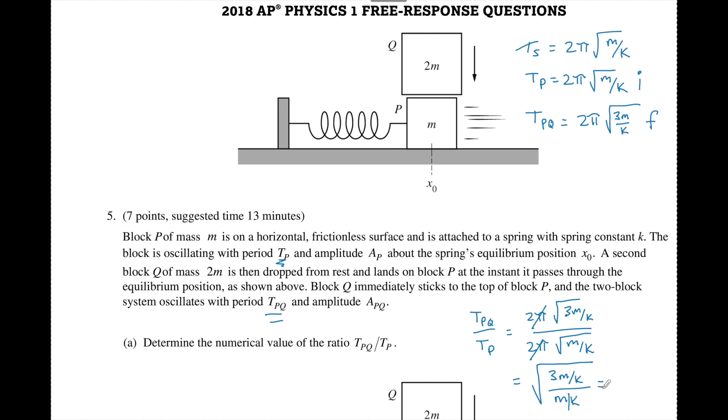And to simplify that further we can bring this up to the top and say this is 3m over k times k over m all under the square root. This will cancel, this will cancel and we see that the ratio given a numerical value is the square root of 3.